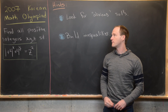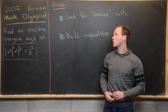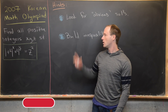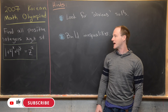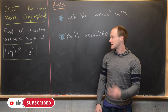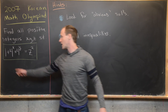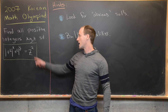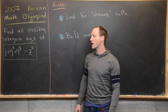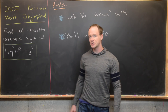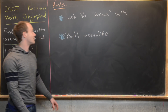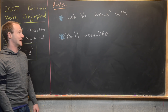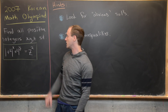We're going to look at a nice number theory problem from the 2007 Korean Math Olympiad. Our goal is to find all positive integers x, y, and z satisfying this equation: 1 plus 4 to the x plus 4 to the y equals z squared. Before we look at the solution, here are some hints. My first hint is to look for obvious values of x, y, and z that would satisfy this equation.